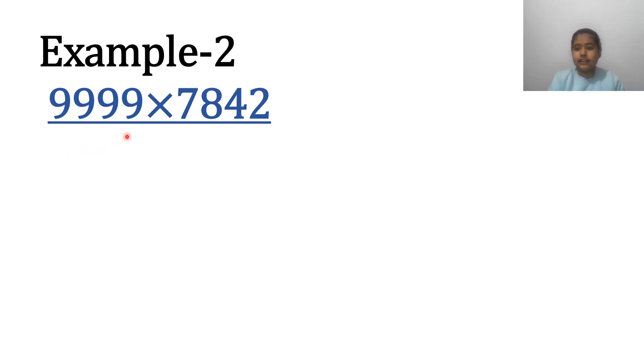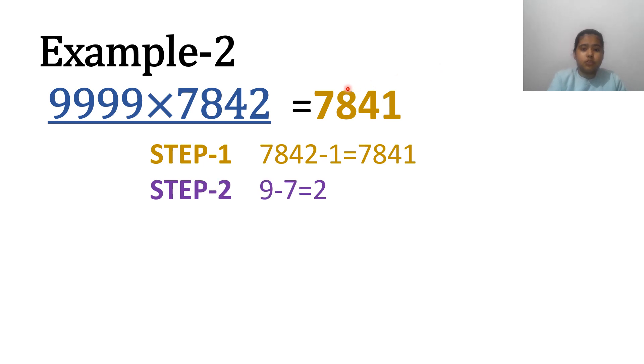Let us take one more example. 9999 multiplied by 7842. Step 1. Subtract 1 from 7842. We get 7841.